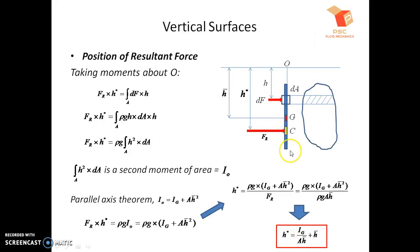So H* is the position of the resultant force — specifically, H* is the distance of the center of pressure from the free surface of the fluid. Since I_G/(A·H̄) is a positive quantity added to H̄, H* will always be greater than H̄, confirming that the center of pressure is always located below the centroid of the plane surface. Thank you.